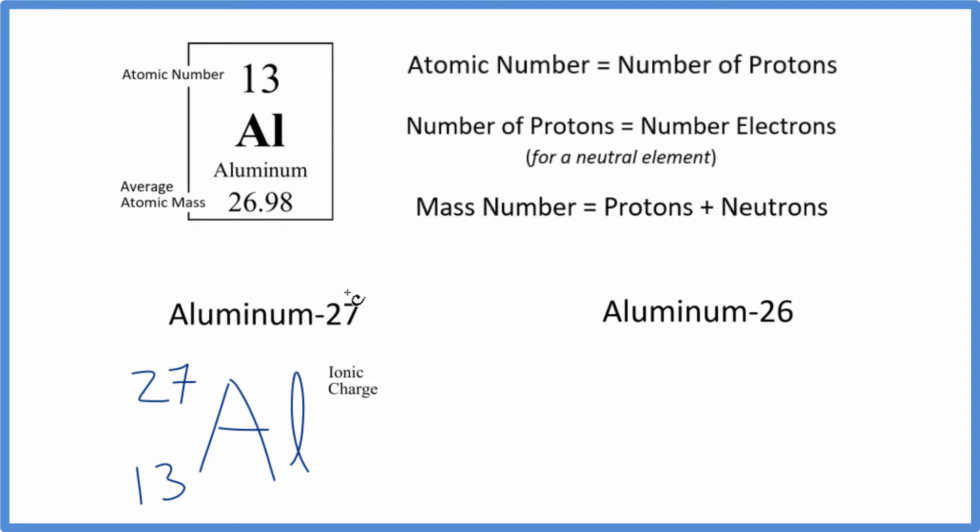And it doesn't say this is an ion or anything. So we don't really have an ionic charge. It's neutral. We could put a zero there. At this point, we have the nuclear or isotope notation for the isotope aluminum 27.